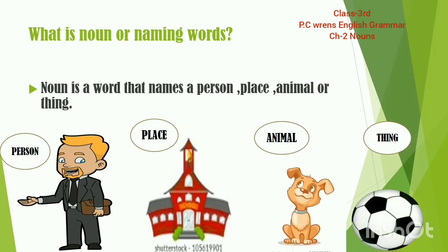Kisi bhi person ka naam, kisi bhi place ka naam, kisi bhi animal ka naam, aur kisi bhi thing ka naam. Person means log, place means jagha, animal means janwar, thing means cheez. So, it is the name of a person, place, animal, or a thing.